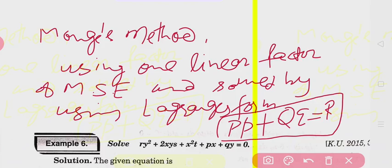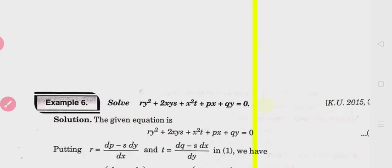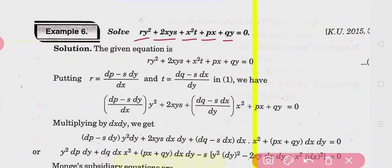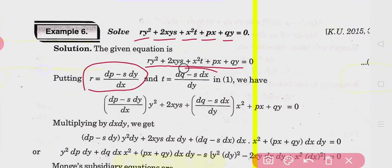I will discuss one example. The statement is: you have to solve the equation r·y² + 2xy·s + x²·t + px + qy = 0. First of all, by using Monge's method, you have to find out the value of small r and t. There is no need to remember these values — how to find r and t we have already discussed in the previous lecture.